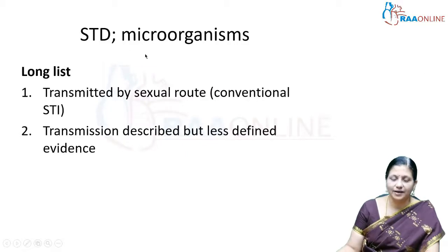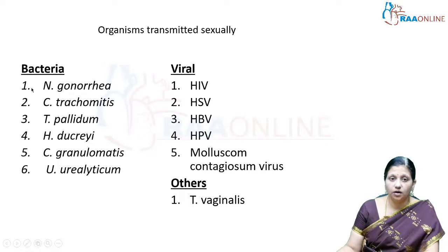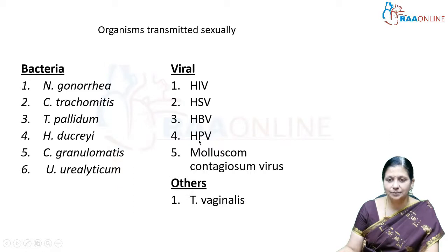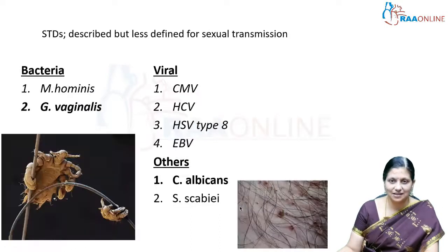There is a long list of microorganisms causing STIs. Bacterial causes include Neisseria gonorrhoeae, Chlamydia trachomatis, Treponema pallidum, Haemophilus ducreyi, Calymmatobacterium granulomatis, and Ureaplasma urealyticum. Viral causes include HIV, herpes simplex virus, hepatitis B virus, human papillomavirus, and molluscum contagiosum virus. Protozoal causes include Trichomonas vaginalis.